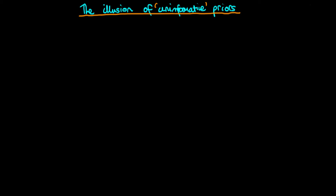In this video I want to talk about the illusion of so-called uninformative priors. By the end of this video I hope to convince you that although a prior may appear uninformative in one frame of reference, in another frame of reference it's very much informative. The example I'm going to use to talk about this issue is that of just flipping a coin.